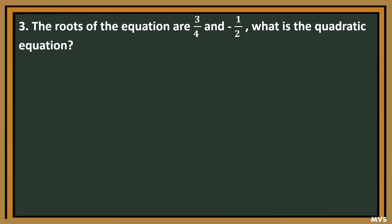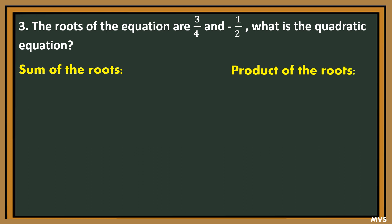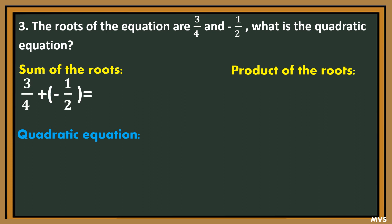Number 3: the roots of the equation are 3/4 and negative 1/2. What is the quadratic equation? First, solve for the sum of the roots and the product of the roots. The sum is 3/4 plus negative 1/2. Since the fractions have different denominators, we need to determine the least common denominator, which is 4. Dividing: 4 divided by 4 times 3 gives positive 3; 4 divided by 2 times negative 1 gives negative 2. Simplify: 1/4.